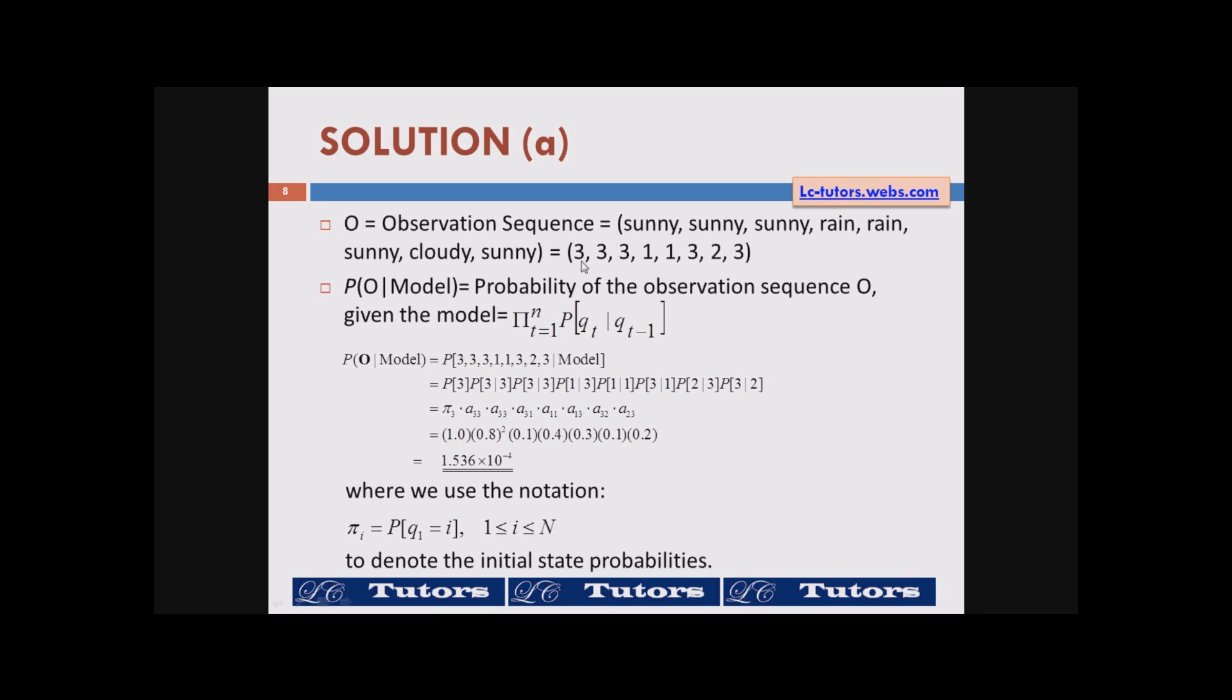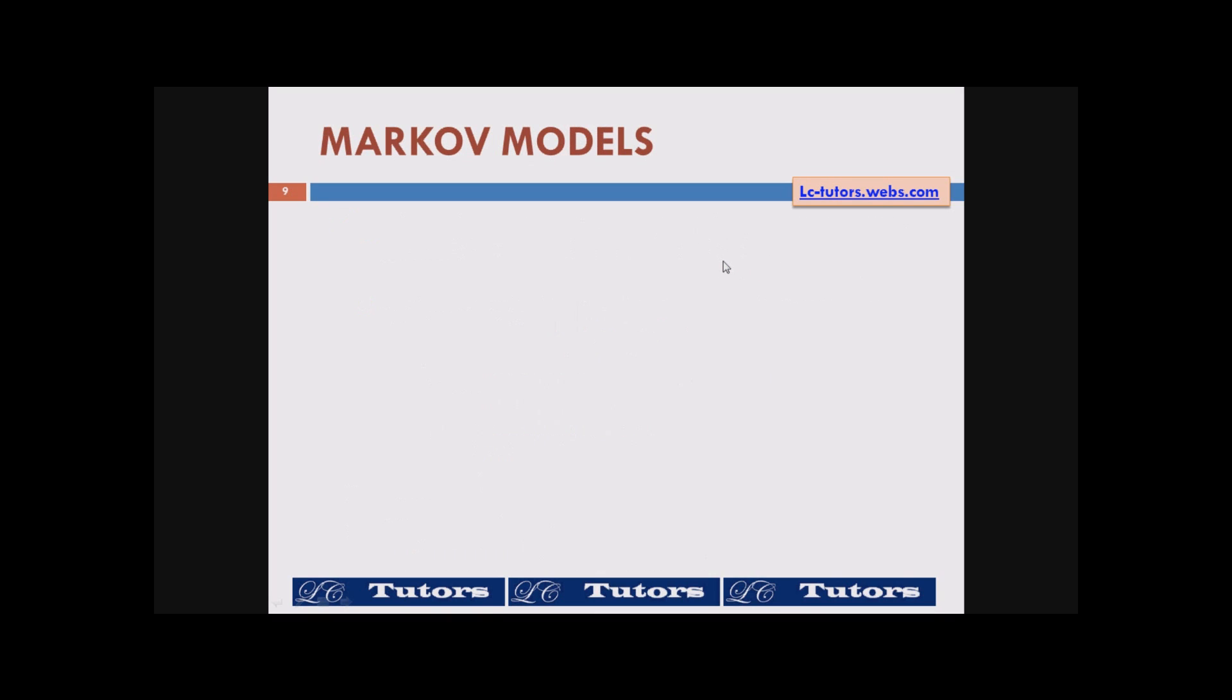But in this case these sequences are observable. Basically the states are observable. So the Markov model is a process in which each state corresponds to a deterministically observable event. And hence the output of any given state is not random. So sometimes we cannot use Markov models are too restrictive. Therefore we cannot use to for speech recognition applications.